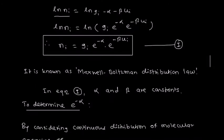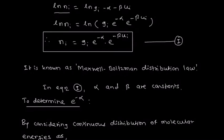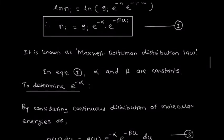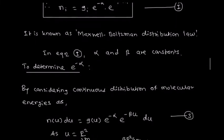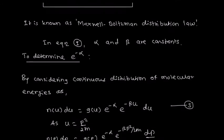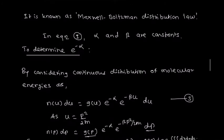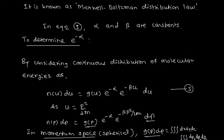Firstly we find e^(minus alpha) by considering the continuous distribution of molecular energies. That means the number of molecules having energy between u and u plus du equals n(u)du equals g(u)·e^(minus alpha)·e^(minus beta·u)·du. We convert the number of molecules having energy between u and u+du in terms of momentum. Using the relation u equals p²/2m, the equation becomes: n(p)dp equals g(p)·e^(minus alpha)·e^(minus beta·p²/2m)·dp. So we find g(p)dp in the momentum space.